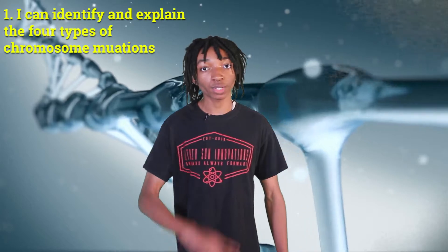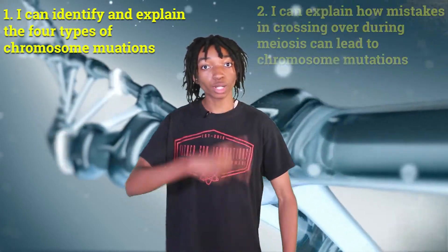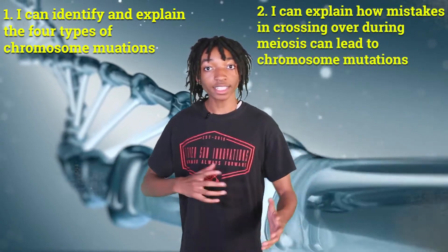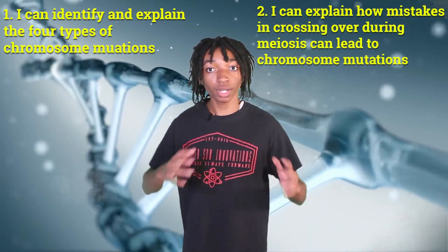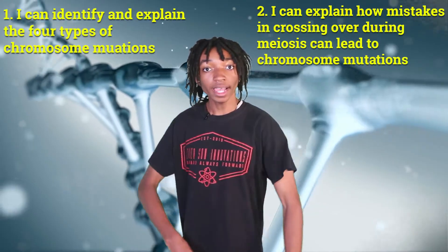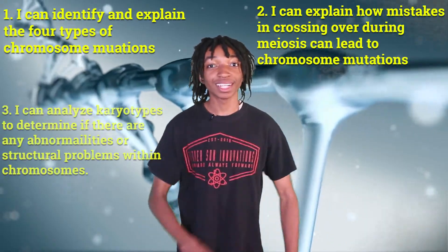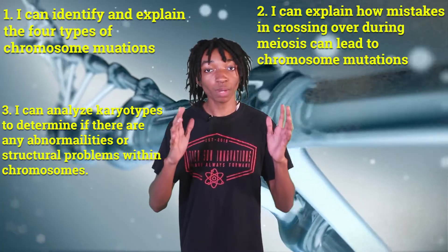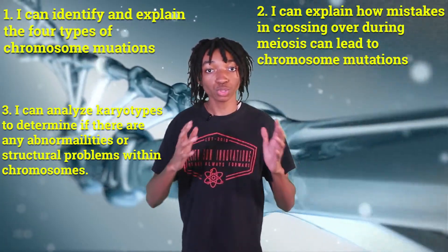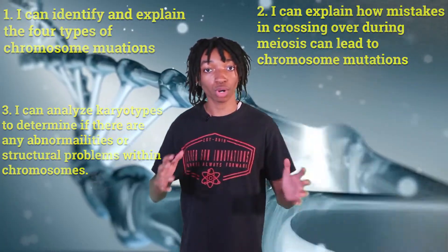Our learning targets for today are: number one, I can identify and explain the four types of chromosome mutations; number two, I can explain how mistakes in crossing over during meiosis can lead to chromosome mutations; and number three, I can analyze karyotypes to determine if there are any abnormalities or structural problems within chromosomes.